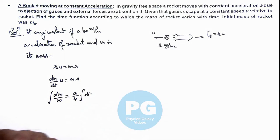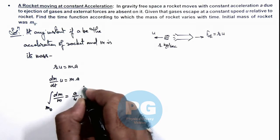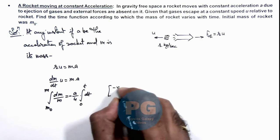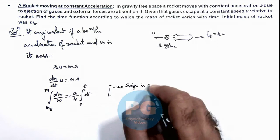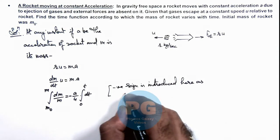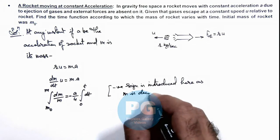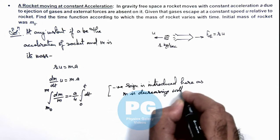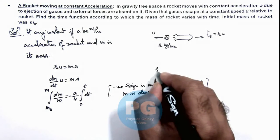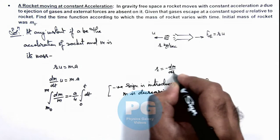We integrate this expression from t=0 where mass was m₀, to a general time t where mass is m. On increasing time, mass is decreasing, so we need to put a negative sign for homogeneity of equation. A negative sign is introduced because m is decreasing with time, so dm/dt is negative, or r = -dm/dt.